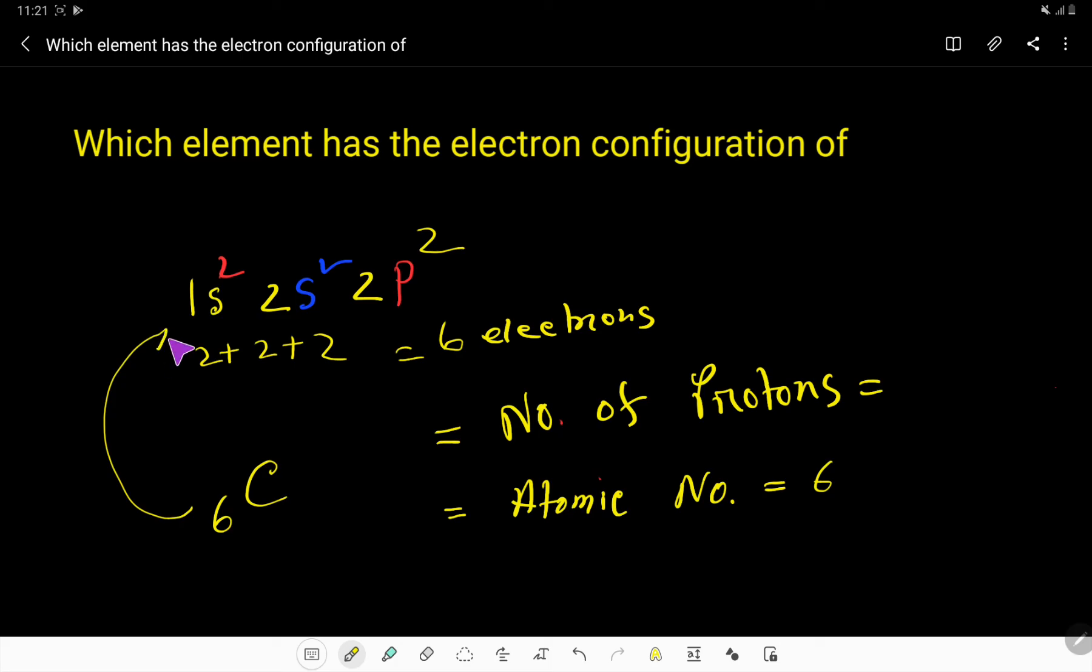And its electronic configuration is this - it has six electrons and six protons. Carbon has six protons, right. So thank you for viewing this video, be well.